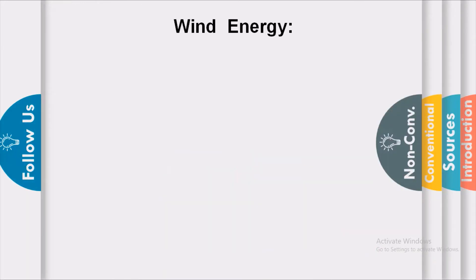Let us discuss another source of energy: wind energy. Moving air is called wind and energy produced from the wind is called wind energy. Wind is caused due to unequal heating of land and water bodies by the sun. This unequal heating generates air movement and causes winds to blow. The kinetic energy of wind is used to generate wind energy from a windmill.